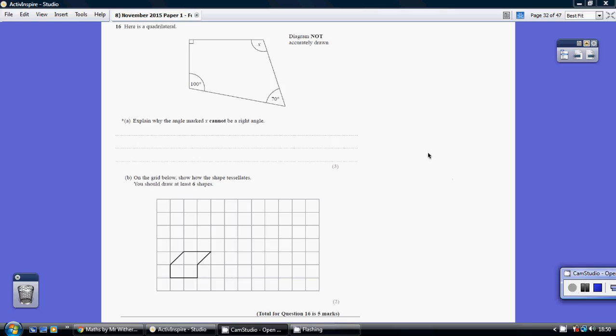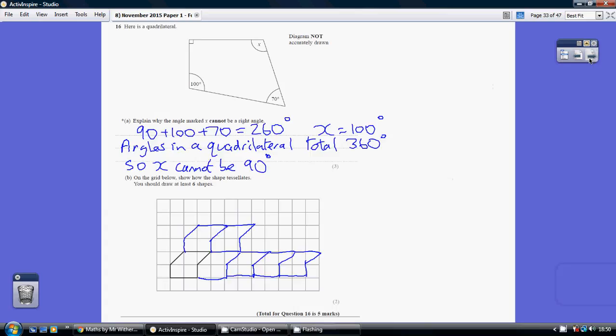Question 16. So explain why the angle marked X cannot be a right angle. Well, if we add up the three angles we have already,